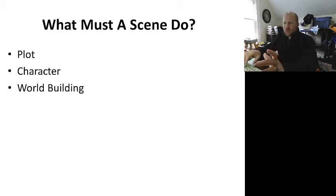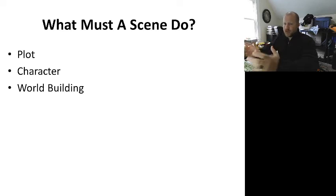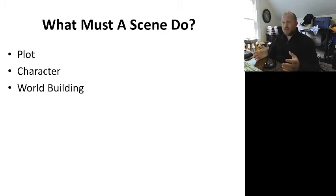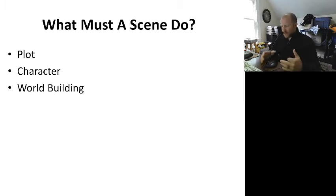Now we're into what must a scene do. When it comes to a scene, there has to be one of three things involved. It needs to either move the plot forward, it needs to develop character, or it needs to help build the world. Ideally it should do all three — a great scene does all three, a good scene does two of these things, and a basic bare-bones scene needs to at least do one of them. So plot, character, world-building needs to be at least one of those three, if not all.